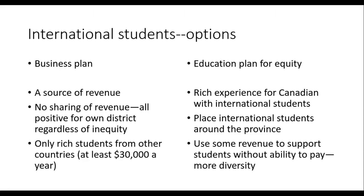Under the business plan, all the money that comes in is positive for the district, but not for the impact it has on equity. At one stage, five or six years ago, the province actually proposed that there be some sharing of revenue, but that was quickly put down by the districts and superintendents who simply weren't prepared to give up the revenue. Another factor in terms of the business plan is that only rich students from other countries are able to be here — it costs at least $30,000 a year by the time you count in about $15,000 in tuition, the homestay costs, and various other things students spend money on, plus the airfare to come to Canada.